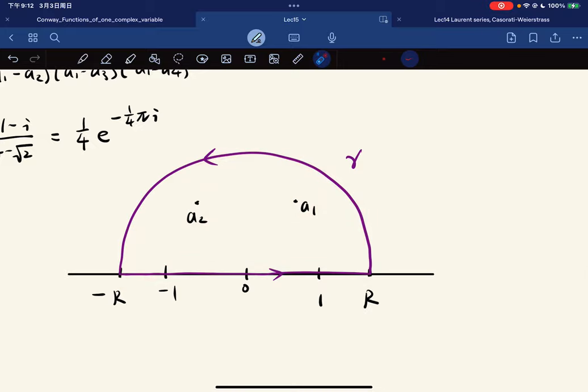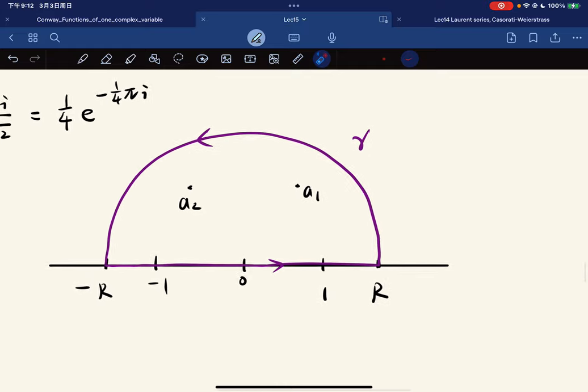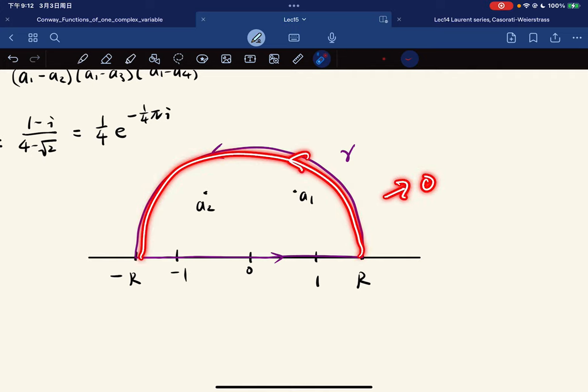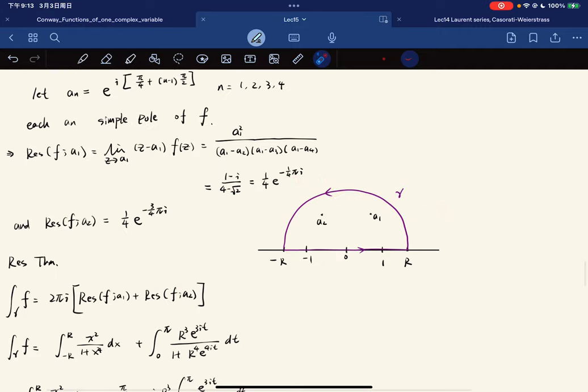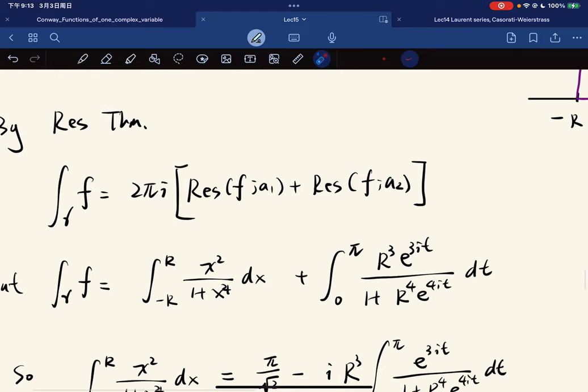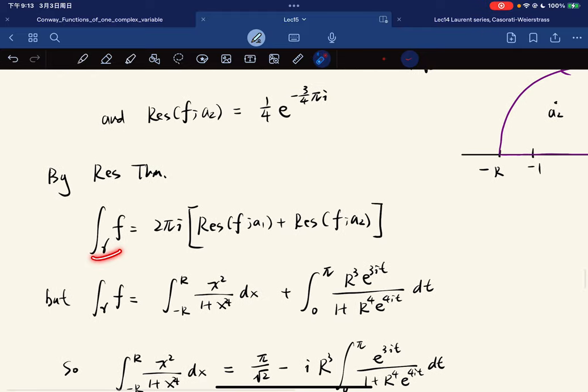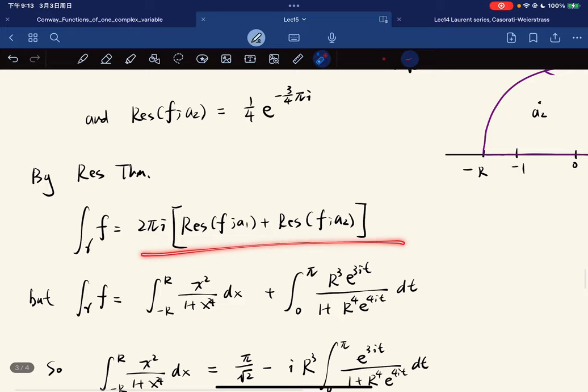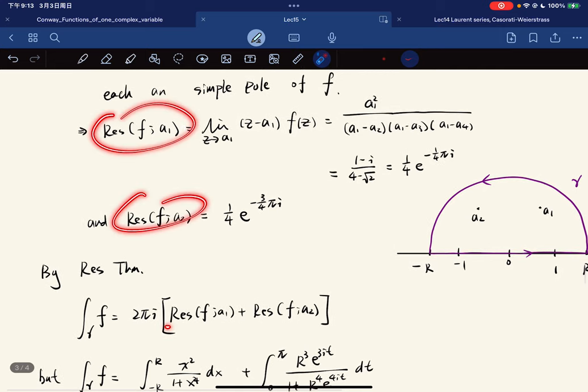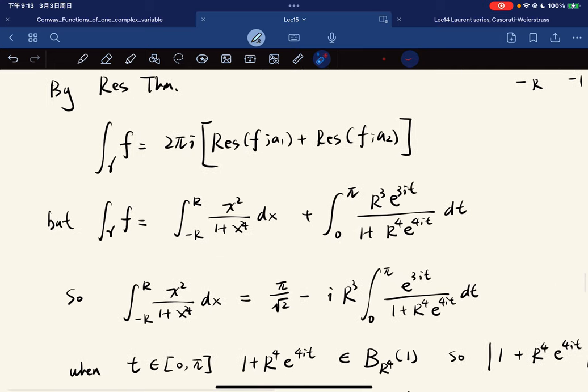So we can apply the residue theorem, right? So we integrate like this. Those are the problematic points. So we really want is this integral, and we will add this integral goes to zero as R goes to zero.